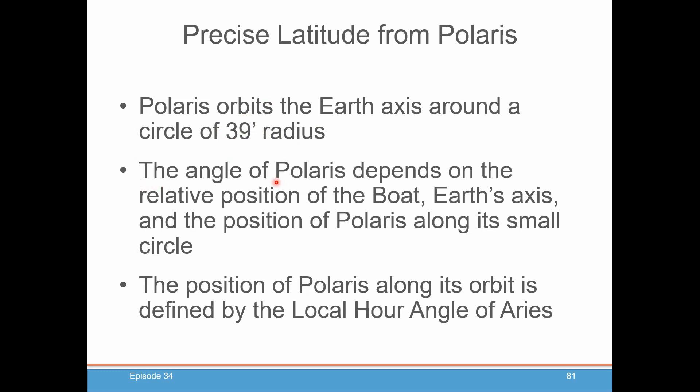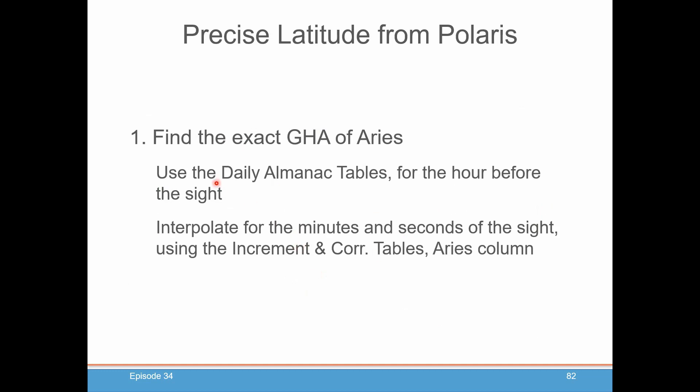The angle of Polaris will depend on the relative position of the boat, where the Earth's axis is that day, and the position of Polaris along that small circle. The position of Polaris along its orbit will be defined by the local hour angle of Aries, which we've been talking about for the last few episodes. So the first thing you're going to want to do is find the exact GHA of Aries. You go into the almanac table for the hour before the site, and you interpolate for the minutes and seconds of the site using the increments and corrections table in the Aries column. You all know that by now.